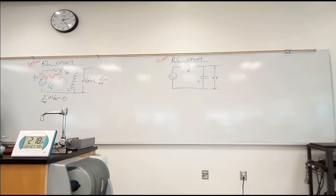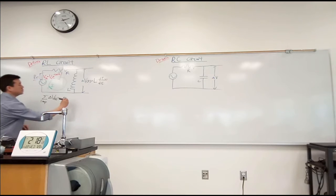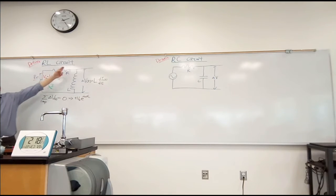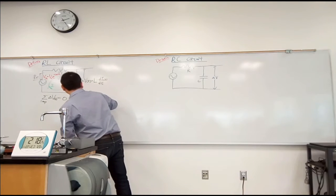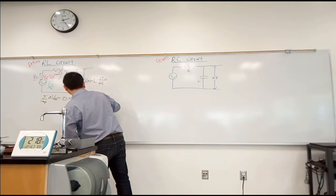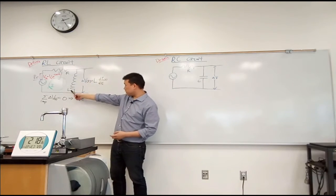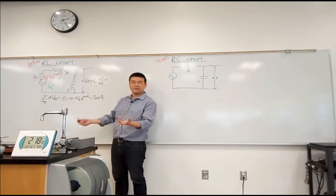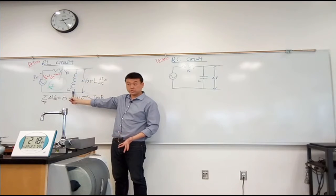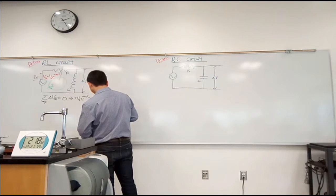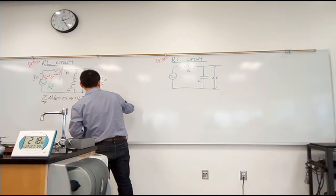As I go across the voltage source, I gain this much voltage: plus V-naught e to the iωt. As I go across the resistor, I lose some amount of voltage: minus current i(t) times R. As I go across the inductor, I lose some amount of voltage: minus L times di/dt. And all of this should add up to zero.